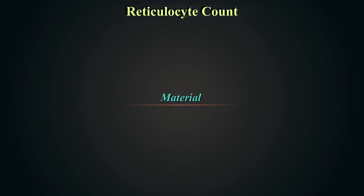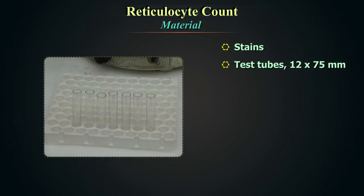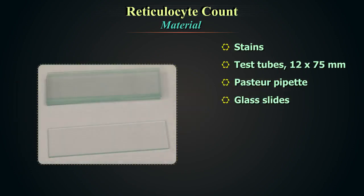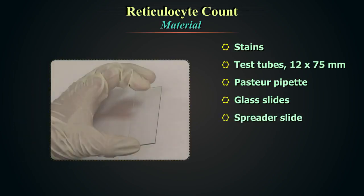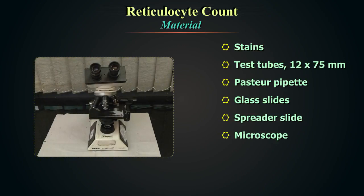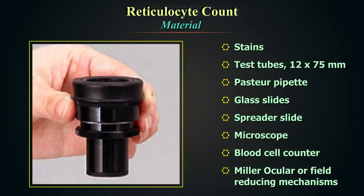The materials required for reticulocyte count are: stains, 75 x 12 mm test tubes, Pasteur pipettes, glass slides, spreader slide, microscope, blood cell counter, and Miller's ocular or field-reducing mechanisms.